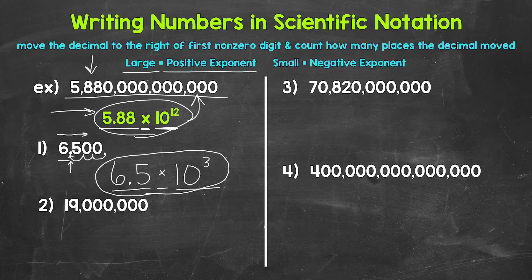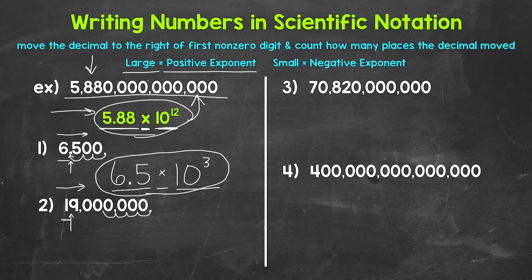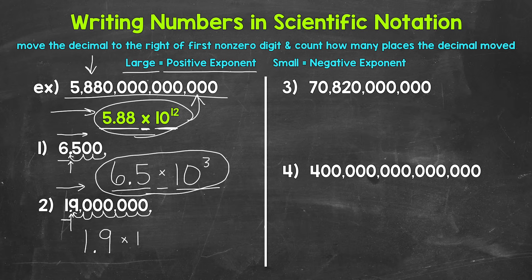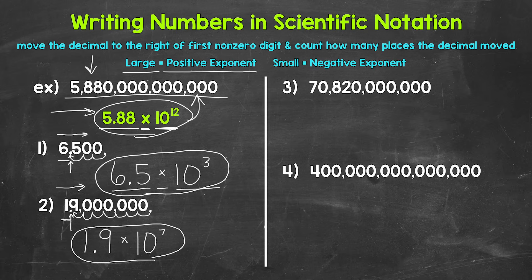Let's move on to number two, where we have 19 million. We need to start by moving the decimal to the right of the first non-zero digit. Looking from left to right, our first non-zero digit is this one. So we need to move the decimal right here in between the one and the nine. And we need to move it once, twice, three times, four times, five times, six times, seven times. Now we can write this in scientific notation: 1.9 — and we leave all of the zeros to the right off — times 10 to the power of seven, since the decimal moved seven places.